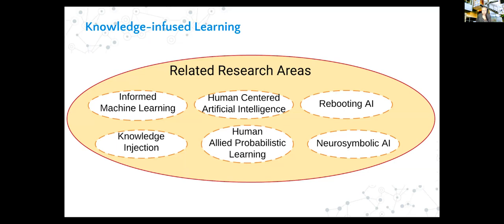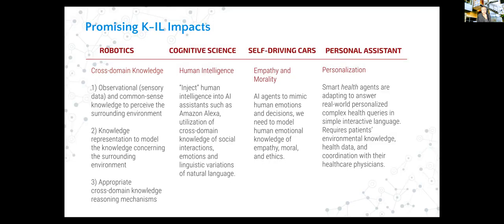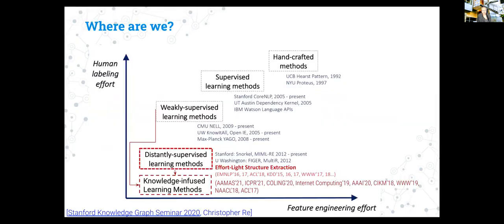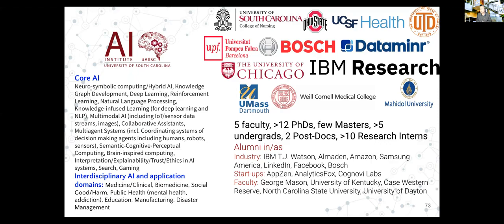Here are some of the sub-areas our group works on, and there are many other areas we are exploring that generally involve knowledge-infused learning in robotics, cognitive science, self-driving cars, and personal assistants - that's one of the big areas for us. The point is that in the past we have survived with growing amounts of human labeling effort and deep feature engineering, but now we are trying to move toward an area where with knowledge-infused learning you have to do much less human involvement and can use existing knowledge. With that I will end so there are at least five minutes left.